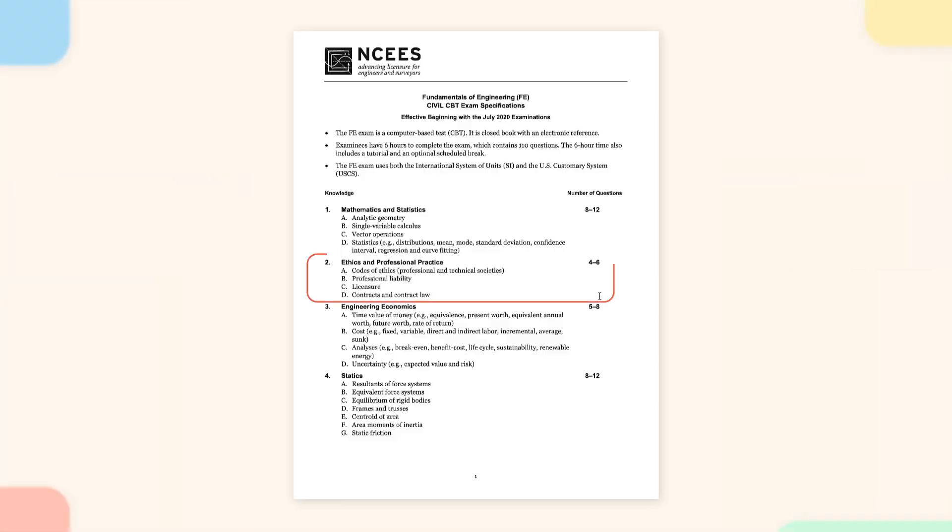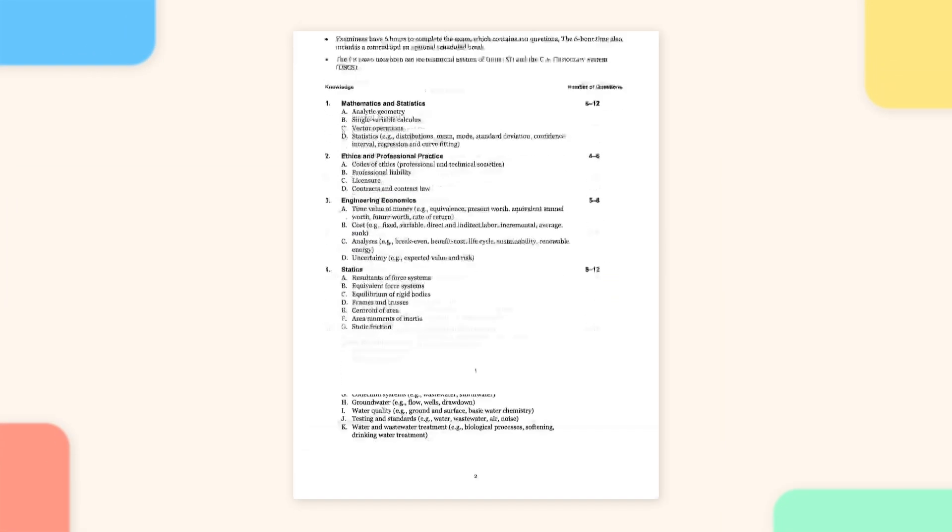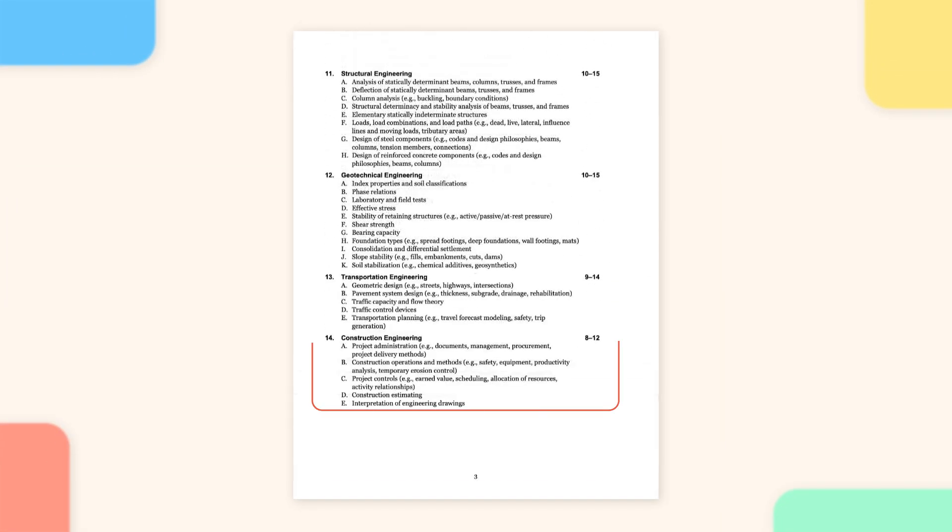Something else to note is that some questions are not in the order of how subjects are mentioned in the specification. For example, there was a construction question right after ethics, and usually construction is at the end of the FE civil exam. This can actually also happen on the actual exam — I remember it happened to me and I was a bit confused at first, so don't be surprised if it happens to you as well.